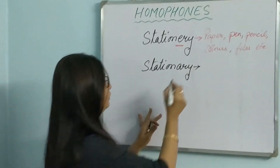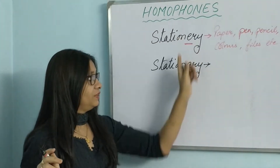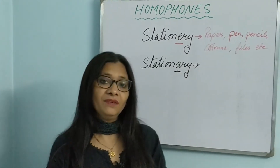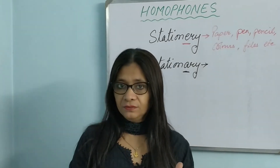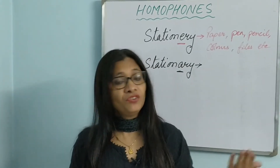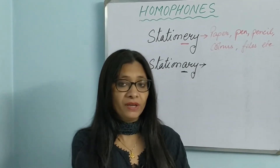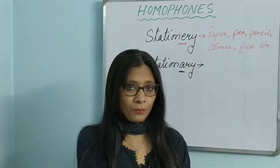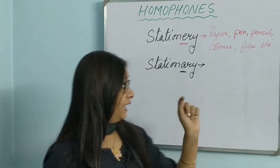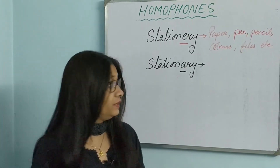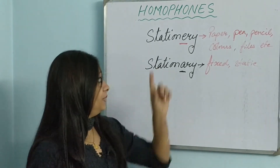Now there is another 'stationary' — with an A. This one is similar in sound but the difference in letter makes a whole lot of difference. Stationary with an A means fixed or static. For example: 'The car was stationary on the road when the truck hit it.' The car was standing, not moving — it was fixed, stopped. So there it will be an A.